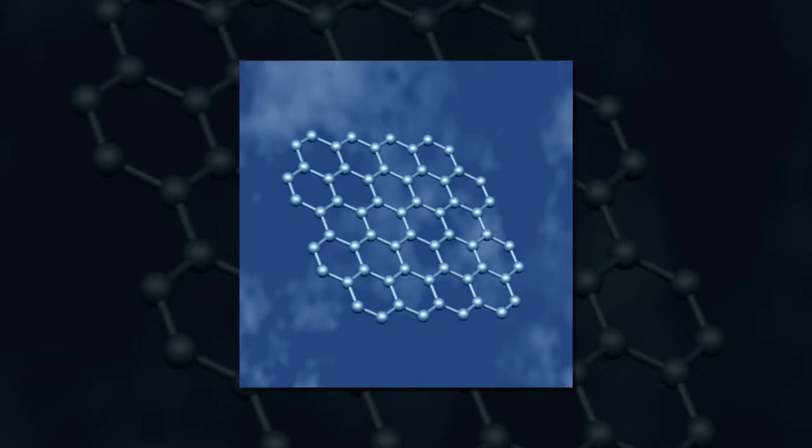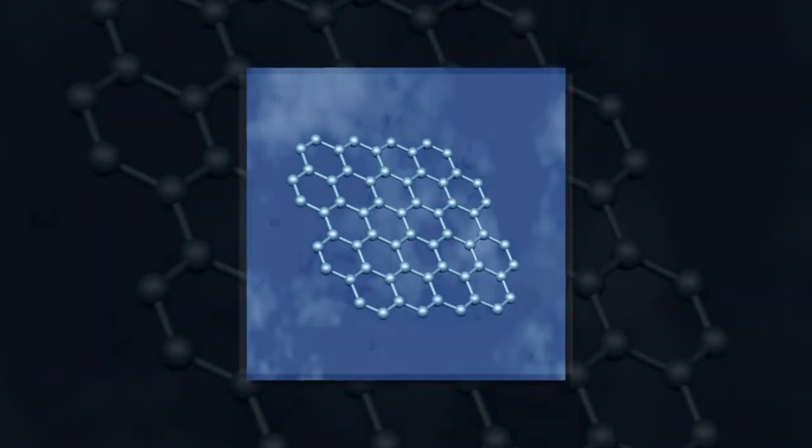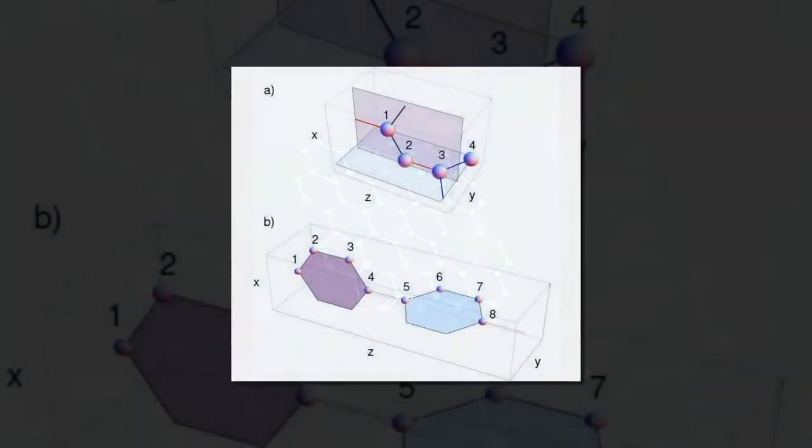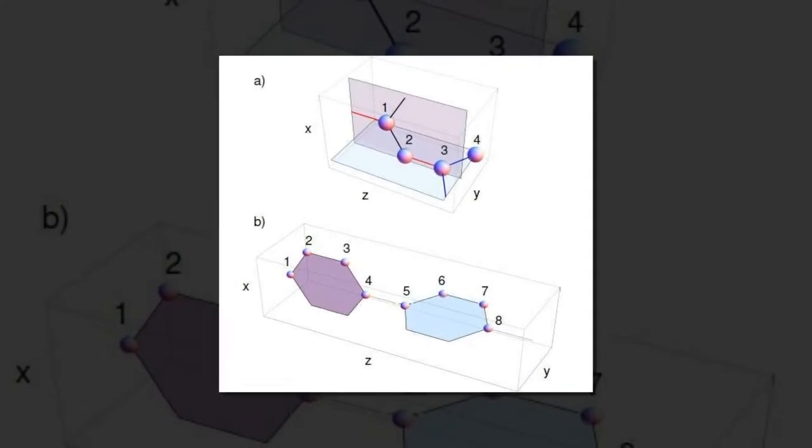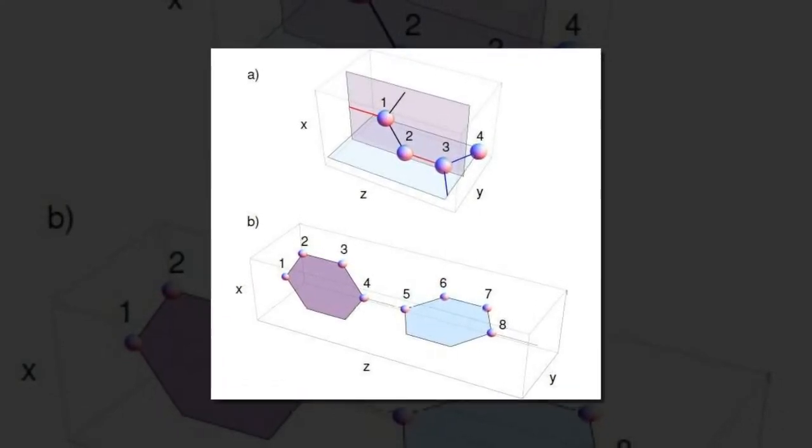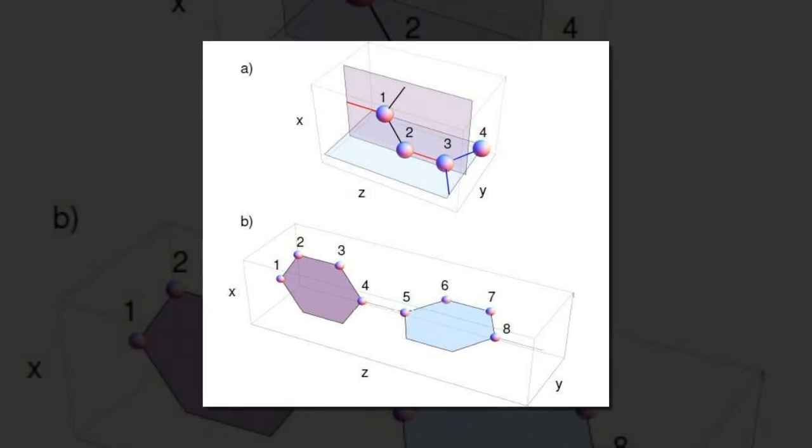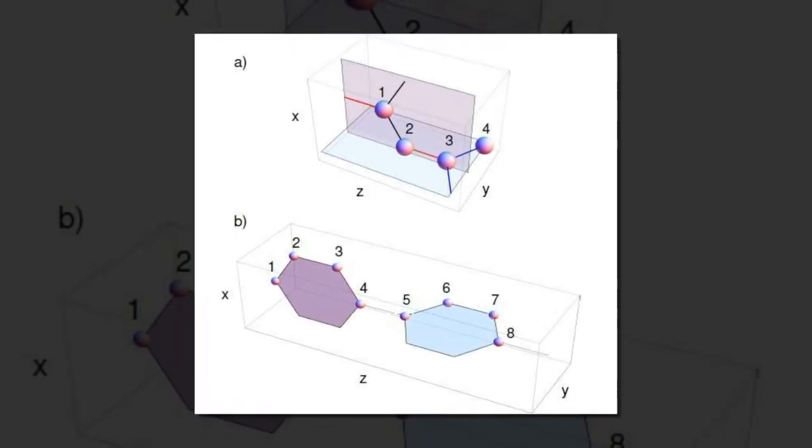The scientists, Kieran Mullen, Bruno Uchoa, and Daniel T. Glatzhofer at the University of Oklahoma, have published a paper on the proposed hyperhoneycomb and related structures in a recent issue of Physical Review Letters.